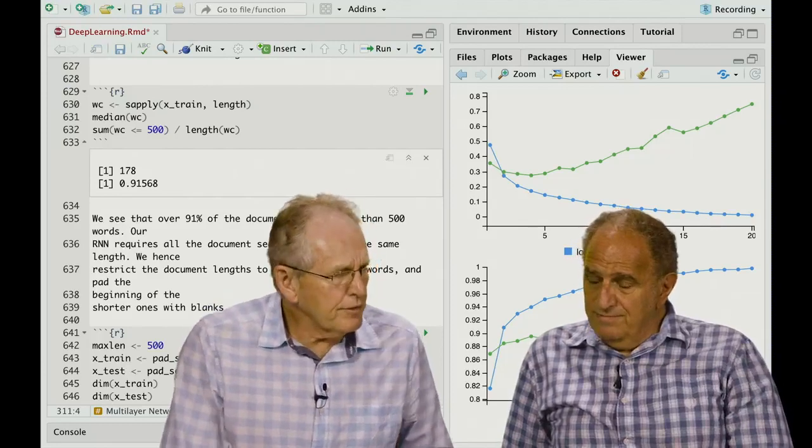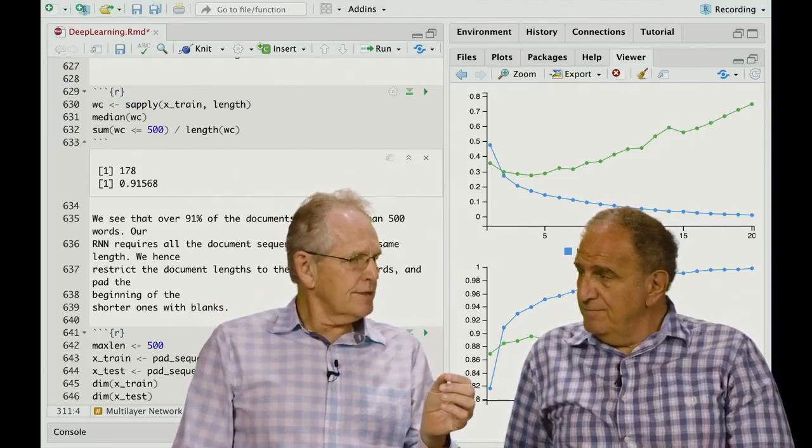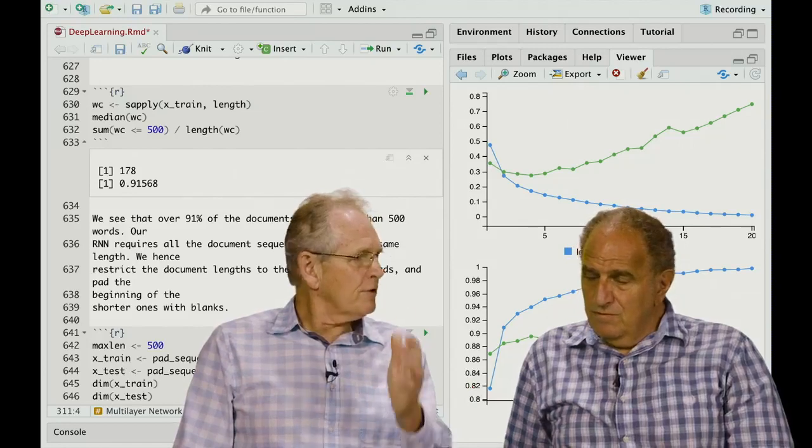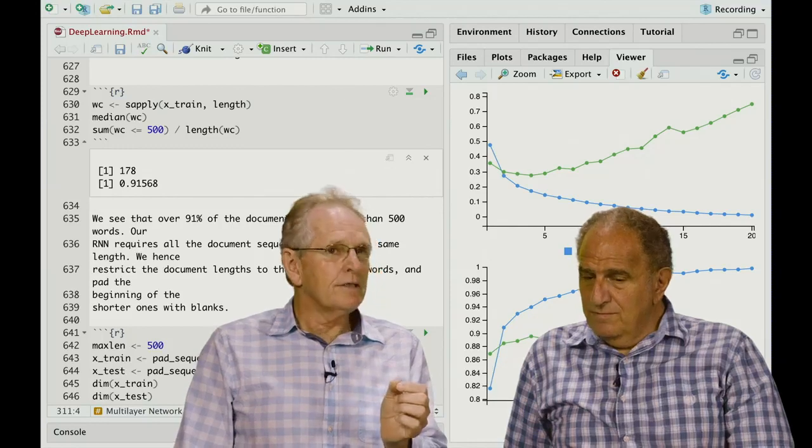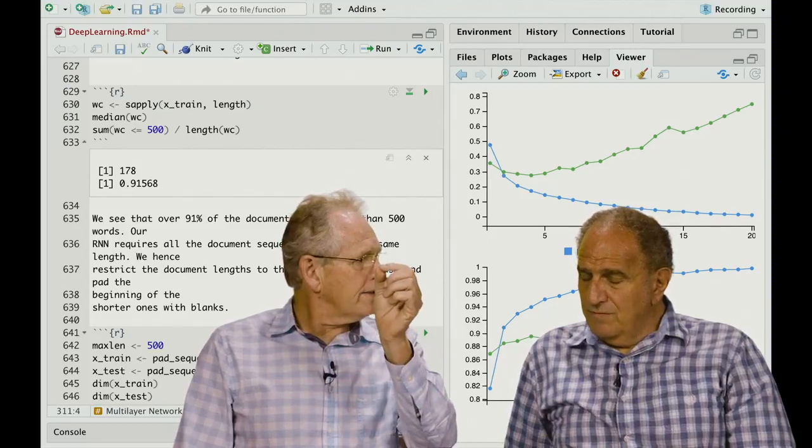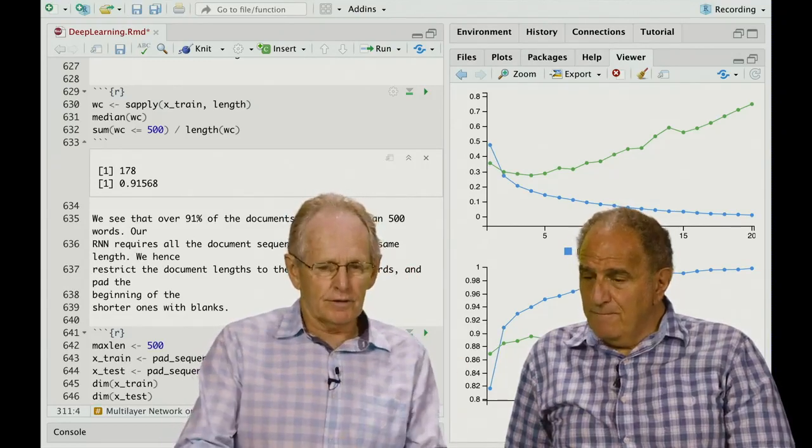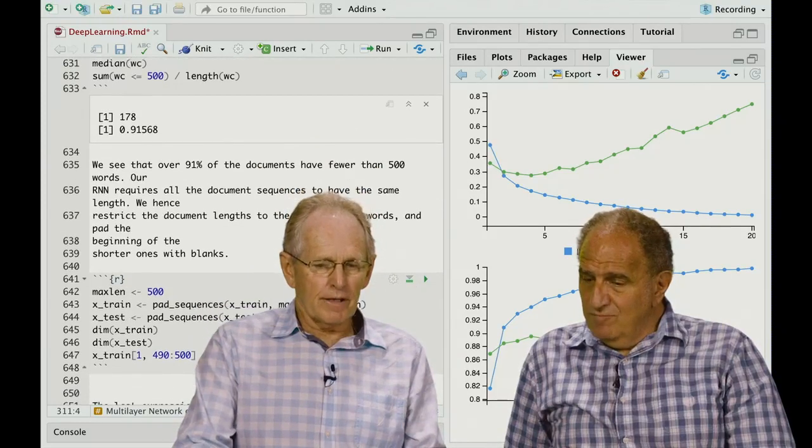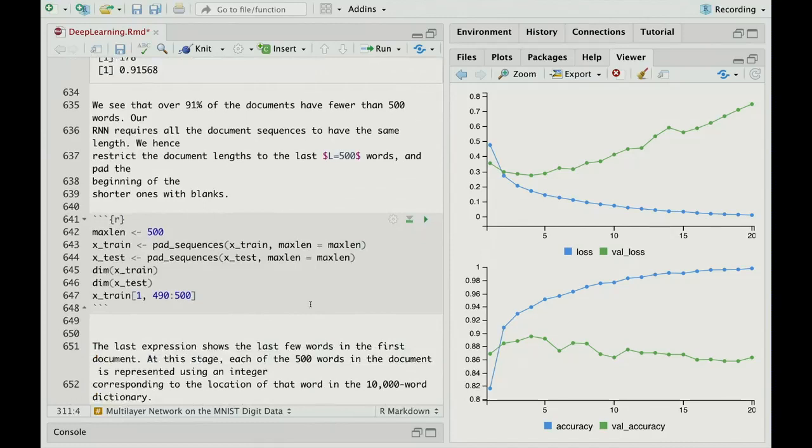That's right, Rob. Yeah. So now we think of a document as a sequence of words. And of course, this is a sequence of these one-hot encoded words. So the feature vector for each word is a very sparse 10,000-dimensional vector with just one one and zeros elsewhere. So that's the input for a recurrent neural network. Although we can use an embedding, one of these learned embeddings, to reduce the dimension.